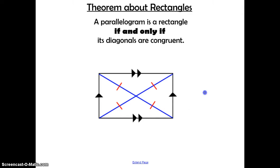All three of those properties — the two for rhombuses and the one for rectangles — because a square is defined as both a rhombus and a rectangle, all three of those are true for squares as well.